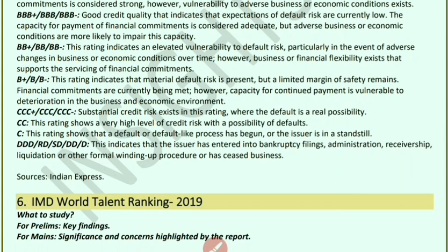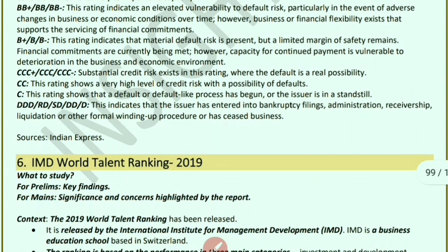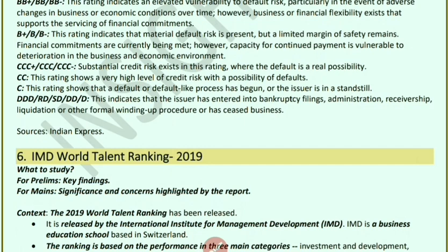If the rating is C, default proceedings have begun. If it is D, RD, SD, DD, or D, the entity has entered into bankruptcy filings, administration, receivership, liquidation, or other formal winding-up procedures and has ceased business.